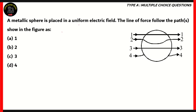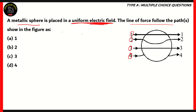Now let's look at another question. A metallic sphere is placed in a uniform electric field. The line of force that follows the path shown in the figure — is it one, two, three, or four? To determine which is correct, we need to understand what kind of field we're dealing with: a uniform electric field.